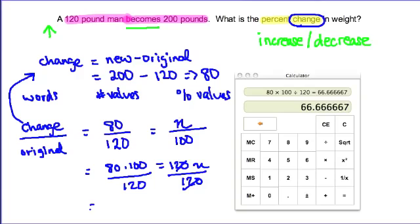So that equals 66.6 repeating percent, or 66 and two-thirds percent. The key thing to remember is that change can be an increase or a decrease, so I'm going to state that this is a 66.6 percent increase.